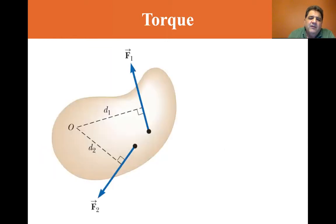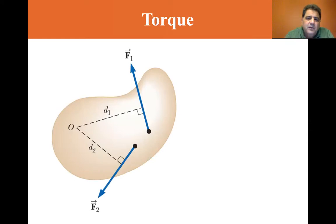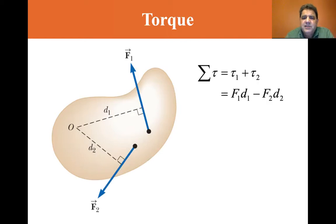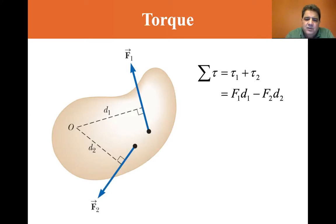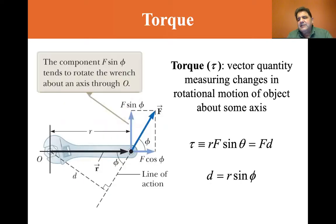When you have two forces — force one and force two — acting about an origin, that O is the pivot point. The sum of the torques equals torque one plus torque two, which equals F1 times D1 minus F2 times D2. What does that actually mean? What does torque mean?